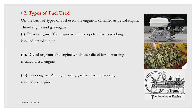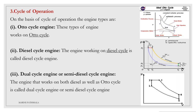Gas engine: an engine using gas fuel for its working is called a gas engine. The third classification is on the basis of cycle of operation. The engine types are: Otto cycle engine — these types of engine work on the Otto cycle; diesel cycle engine — the engine working on the diesel cycle is called a diesel cycle engine; and dual cycle or semi-diesel cycle engine — the engine that works on both diesel as well as Otto cycle.